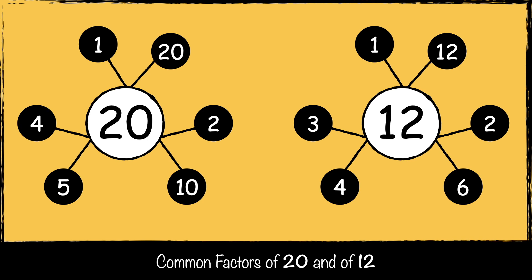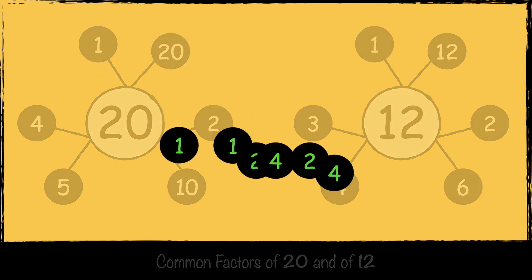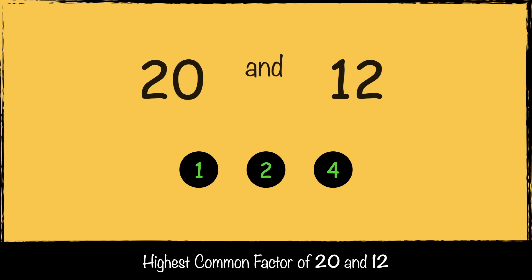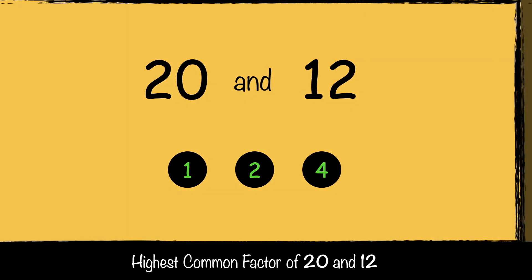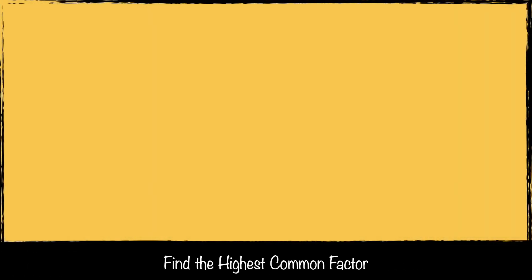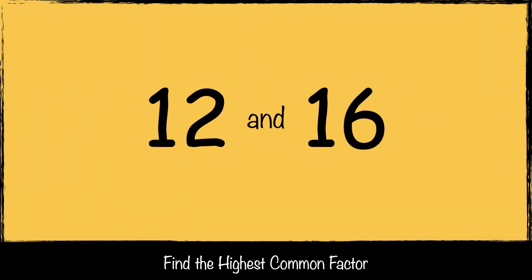Now we can have a look at the common factors of 20 and 12 — what factors do both numbers have? 1, 2, and 4. The highest common factor is the highest number that these two numbers can be divided by, so the highest common factor of 20 and 12 is 4.